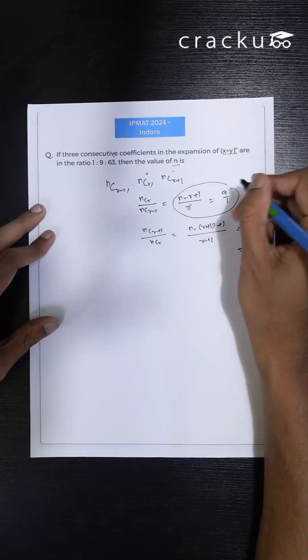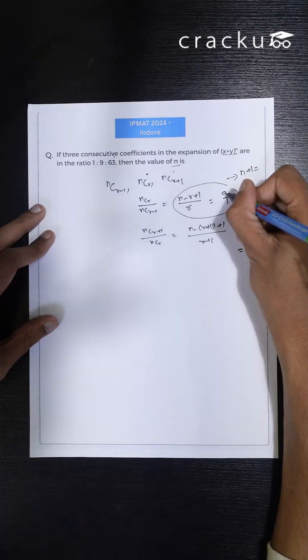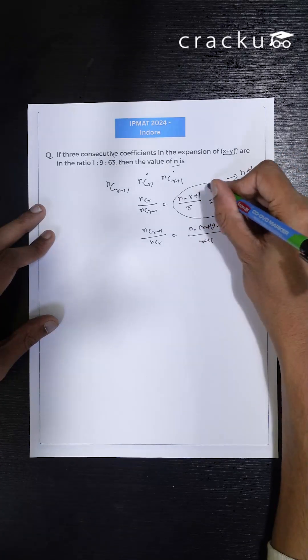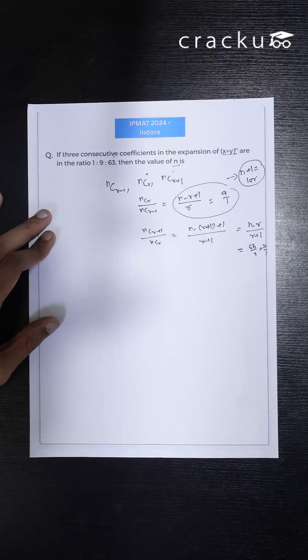So from here I can write n+1 equals to, this r will go over here, so it is 9r, and we can also add an r so it would be 10r. So I am getting an equation n+1 = 10r.